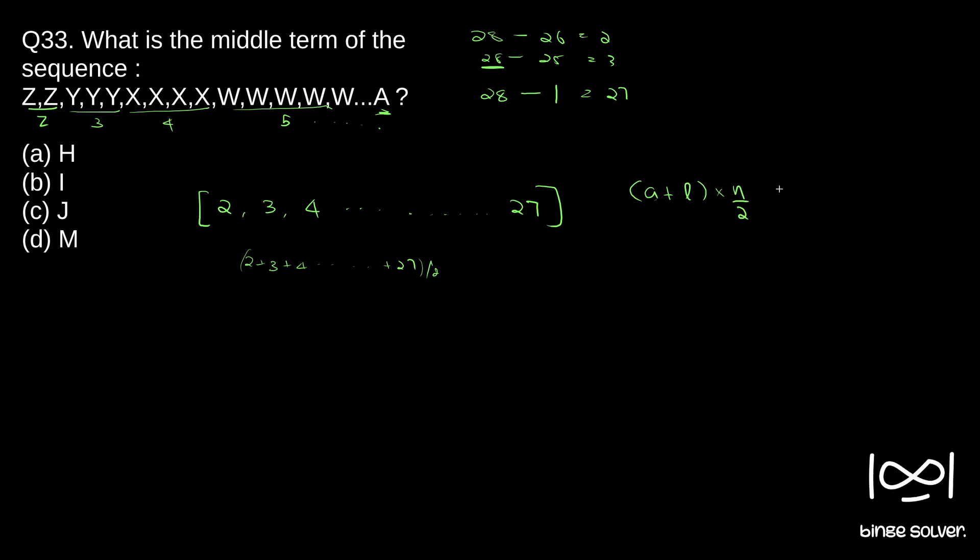So here first number is 2. Last number is 27. Total number of numbers in here will be what? 26 alphabets are there. So we have 26 numbers. So 26 by 2. So if you do it, we get 13 into 29.